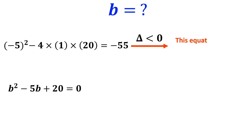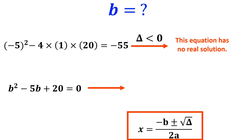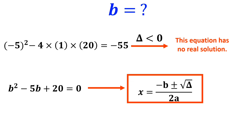Since delta is less than 0, this equation has no real solution, so we need to look for complex solutions. And x equals negative b plus or minus the square root of delta, divided by 2a.